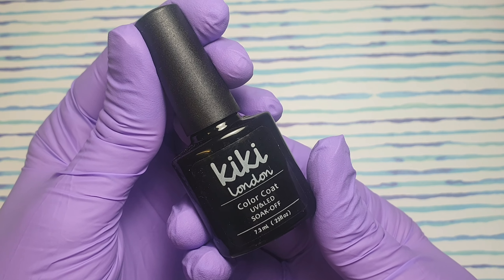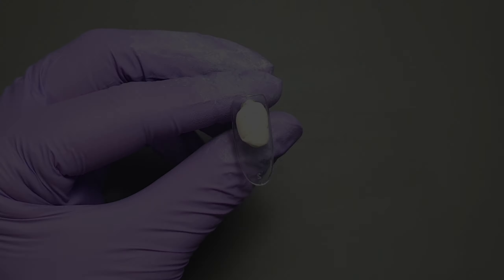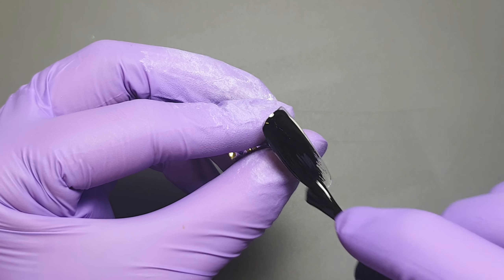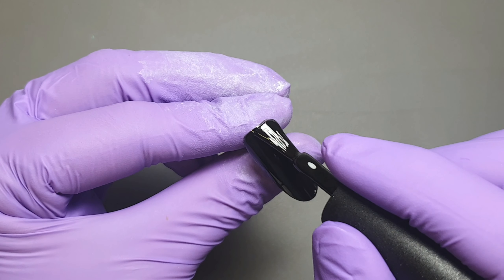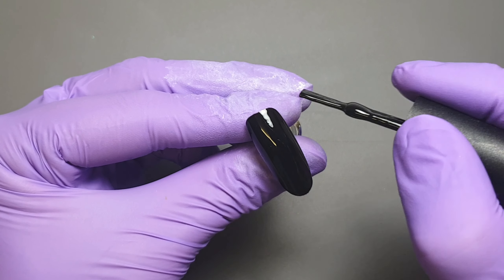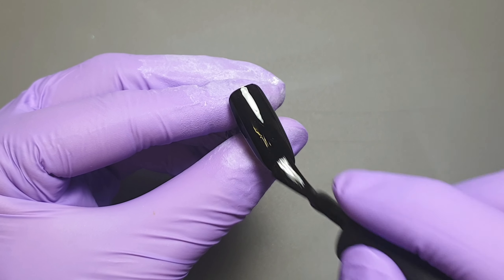On to the next nail, I'm going to be using Kiki London's Black Heart. I'm going to be using this for the background for my water decals. I only did one coat of this because it is super pigmented, so I felt like I could easily get away with just doing one coat. I'm going to apply a thin, even layer of color and then I'll pop this in to cure for 60 seconds.